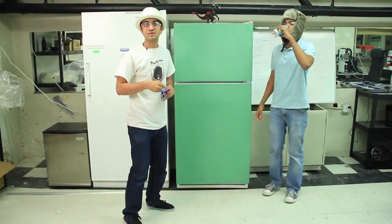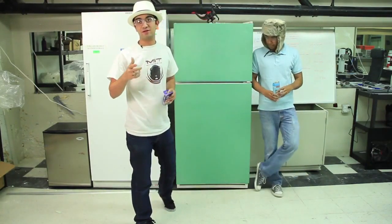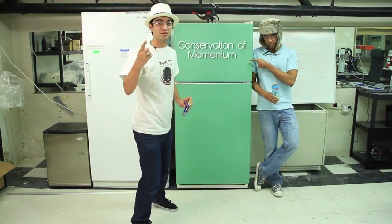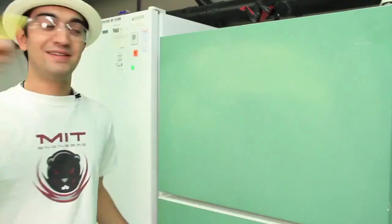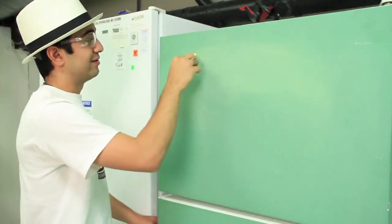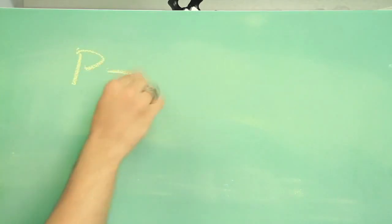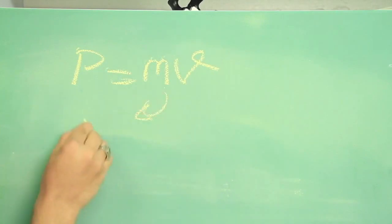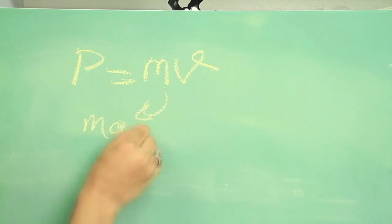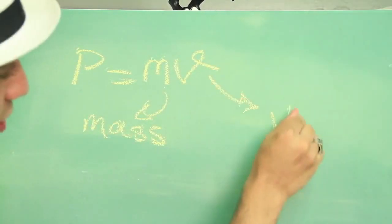So the main two concepts to know for elastic and inelastic collisions are conservation of momentum and conservation of kinetic energy. Remember, the equation for momentum is p = mv, where m is the mass of the object and v is the velocity of the object.